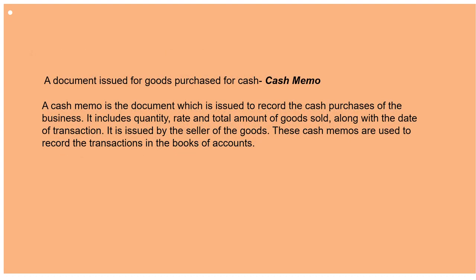First of all, cash memo. A cash memo is a document which is issued to record the cash purchases of the business. It includes quantity, rate, and total amount of goods sold along with the date of transaction. It is issued by the seller. Cash memos are used to record transactions in the books of accounts. Cash memo is prepared while selling goods for cash — it contains date, quantity of goods sold, rate, and amount received. It acts as evidence for the sale of goods for cash.